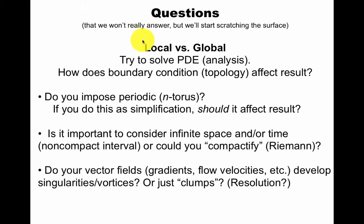Some questions here we won't really answer. It's usually local versus global. Local means local analysis, local calculus. Global means how do you put stuff together. How does the boundary condition affect your result? Put your equations on an n-torus for n variables. If you do this as simplification and it affects your result, is that a problem?